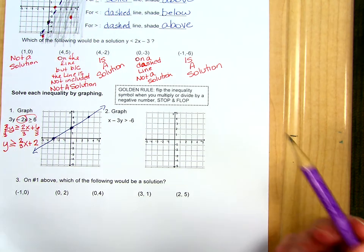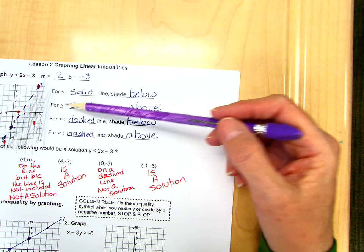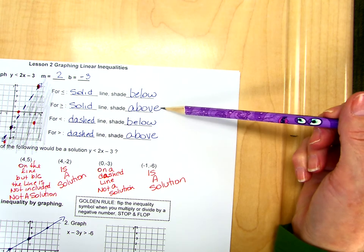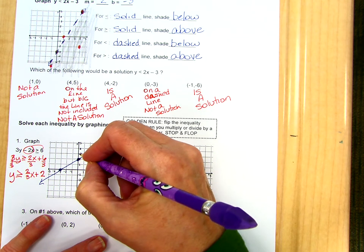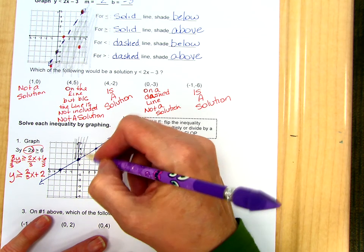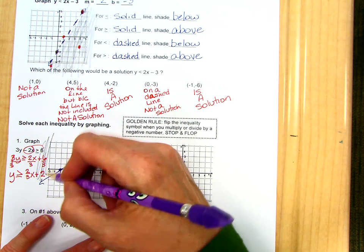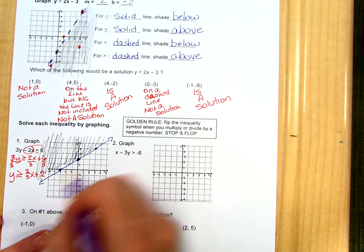Because it is greater than, for greater than or equal to, we get a solid line and we want to shade above. So we look at 2, where is above, the bigger things are here, at 3, 4, 5, etc. So we're shading above the line.